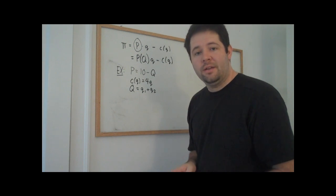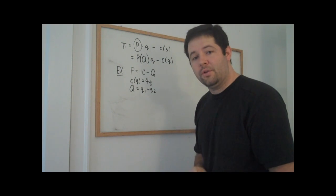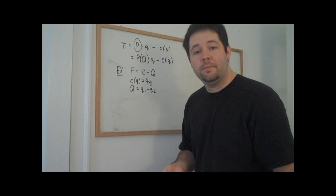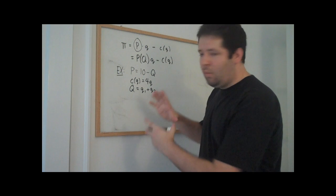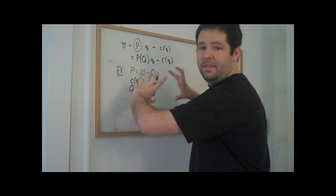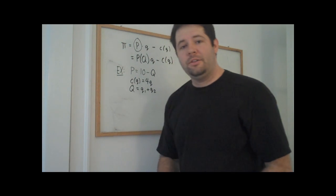Each firm is going to have constant marginal costs of $4 per unit, and there will be no fixed cost, so the total cost is going to be 4 times Q. And the inverse demand curve is given by this.